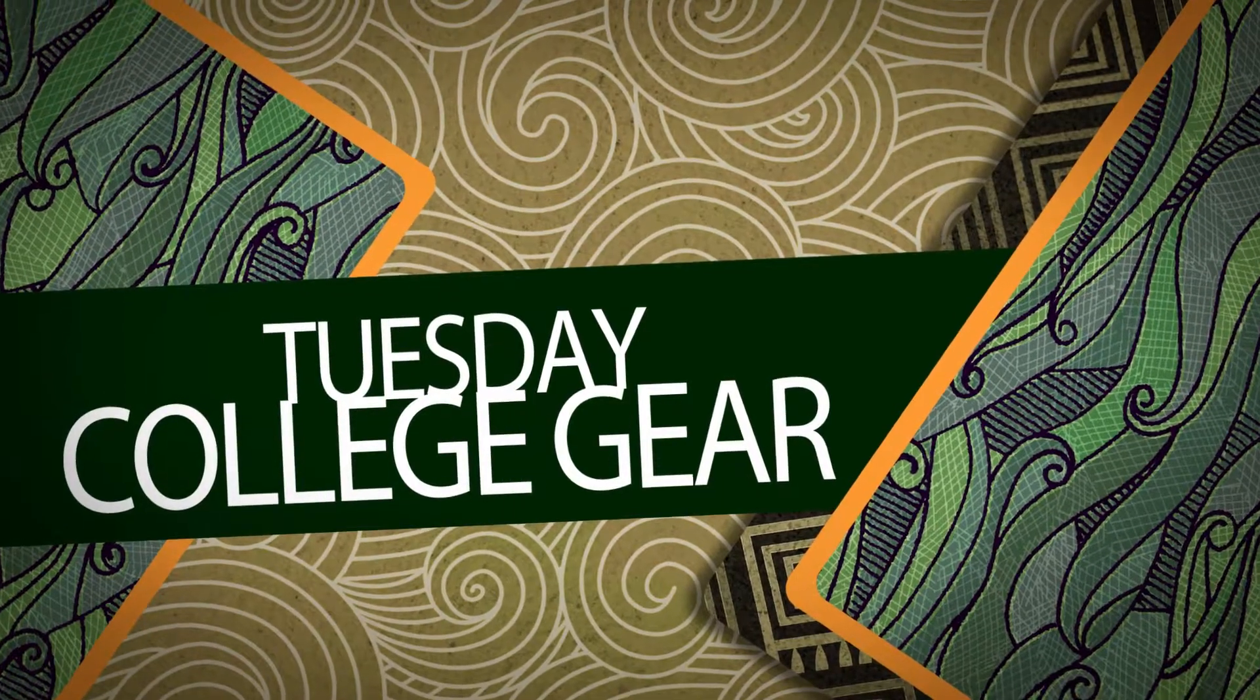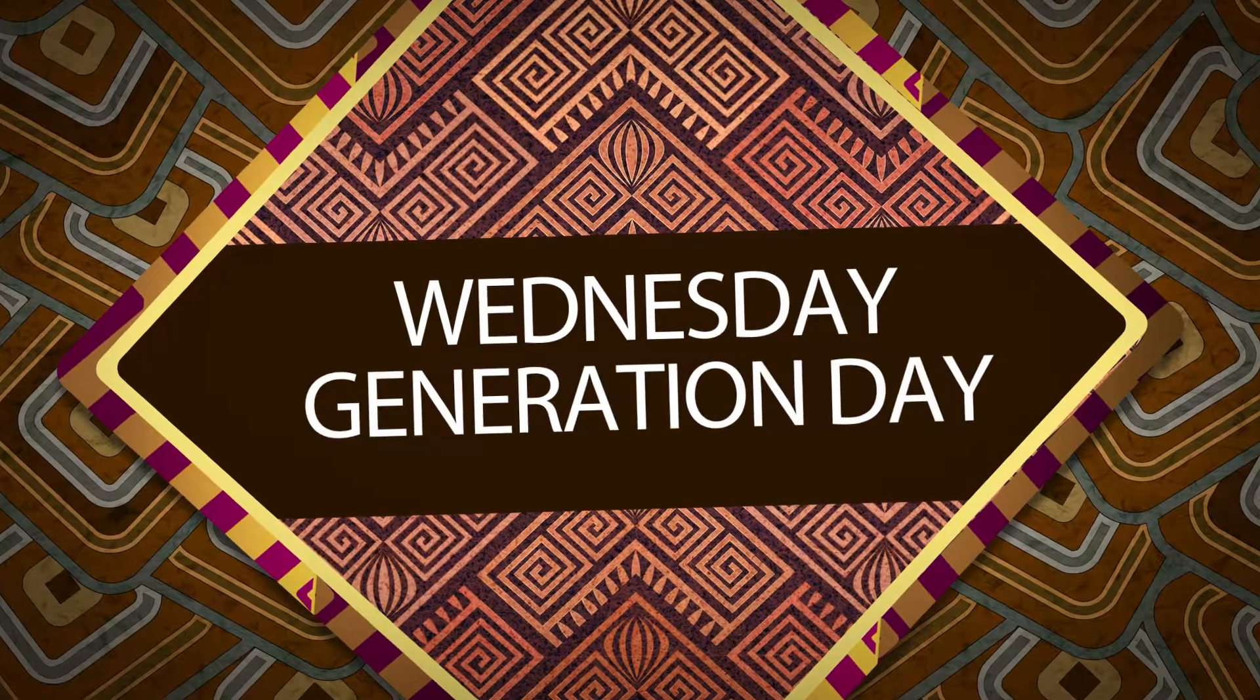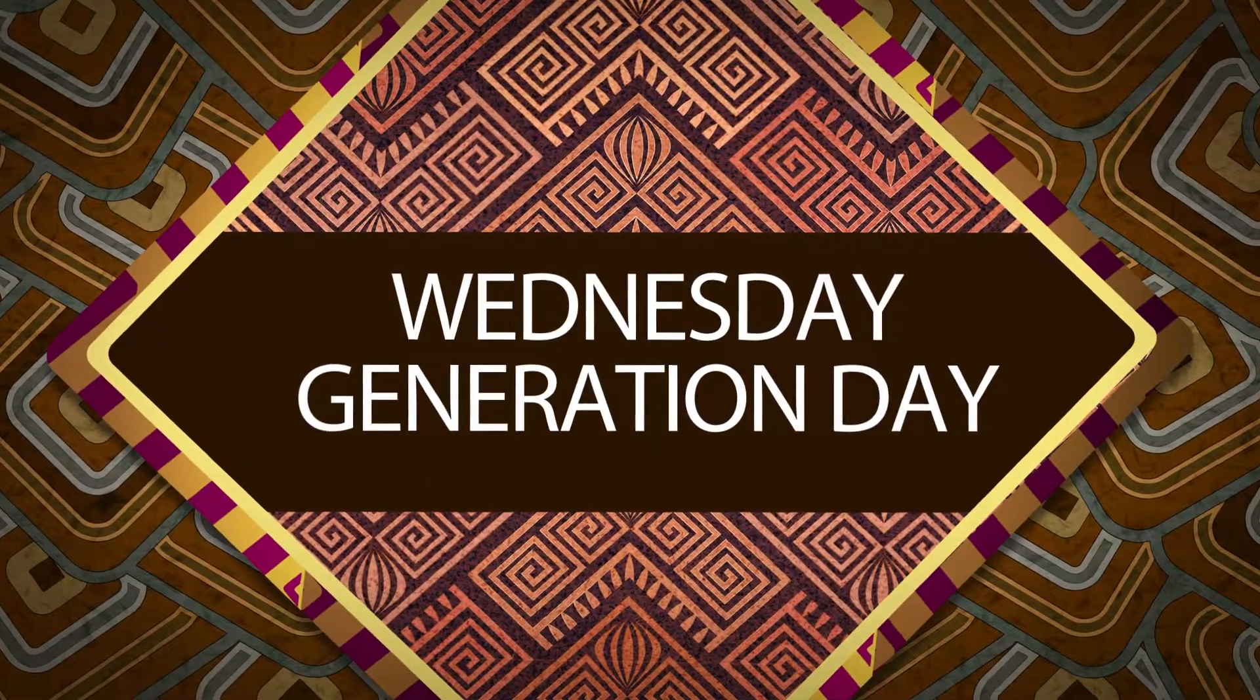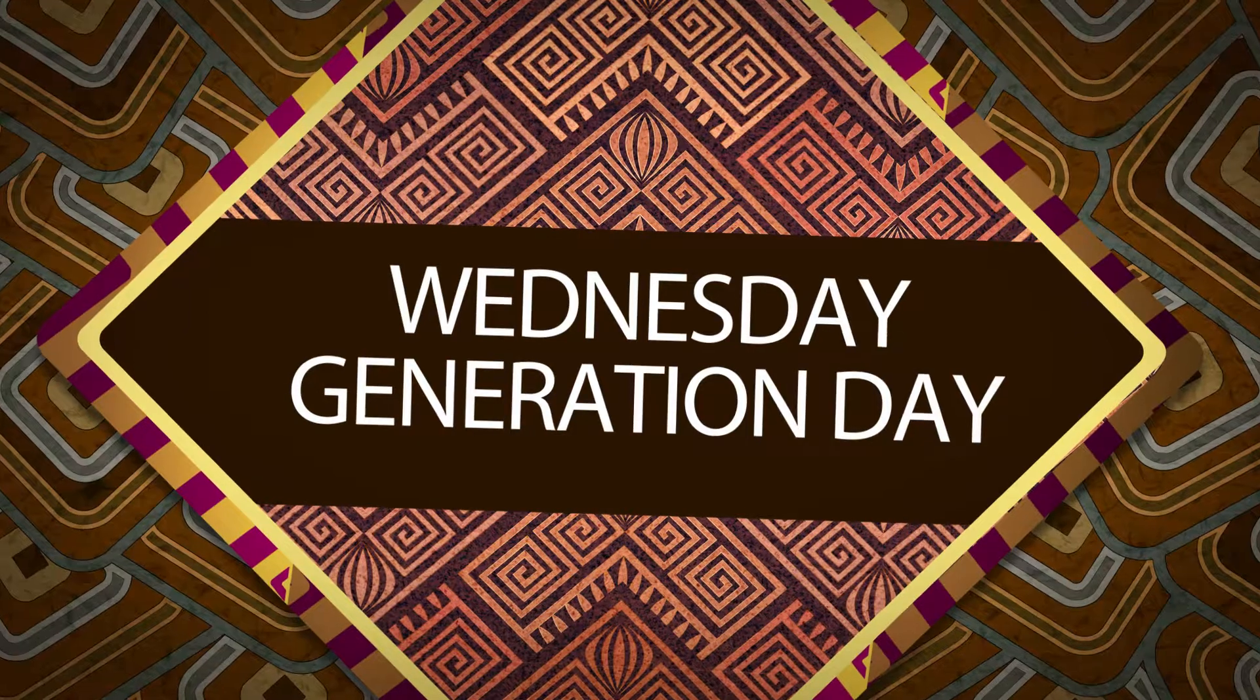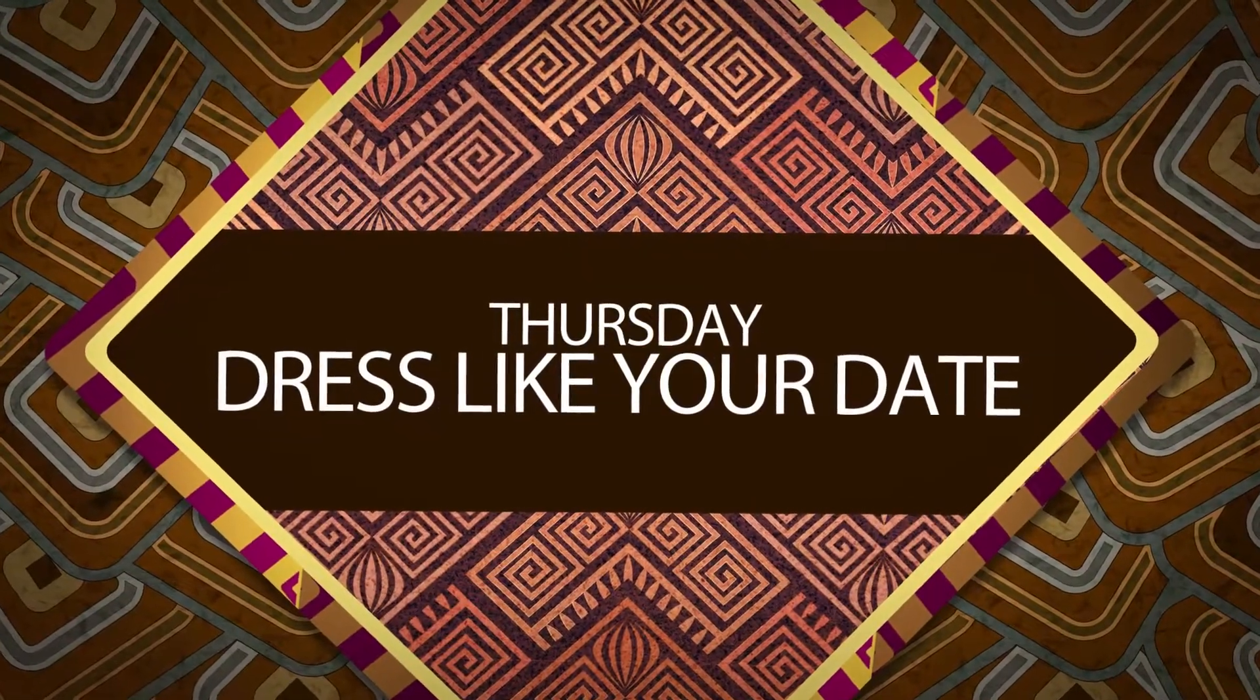Tuesday is College Gear Day. Wear your favorite apparel from your college you plan to attend or hope to attend. Wednesday is Generation Day. Freshmen dress as a baby or toddler, sophomores dress as teenagers, juniors dress as adults or parents, and seniors dress as senior citizens or grandparents. Thursday is Dress Like Your Date Day.